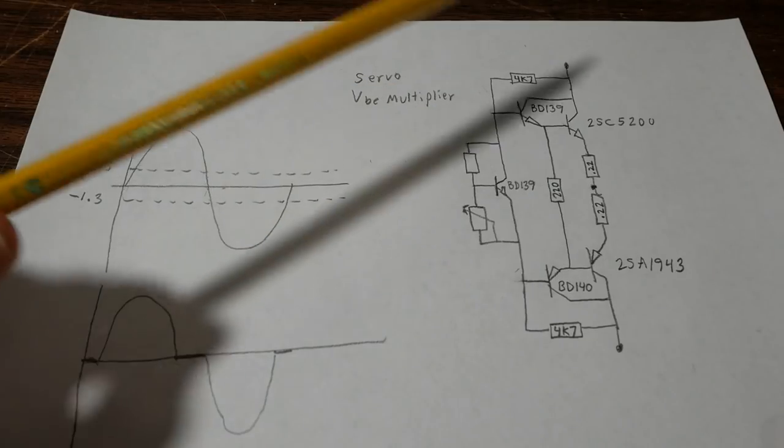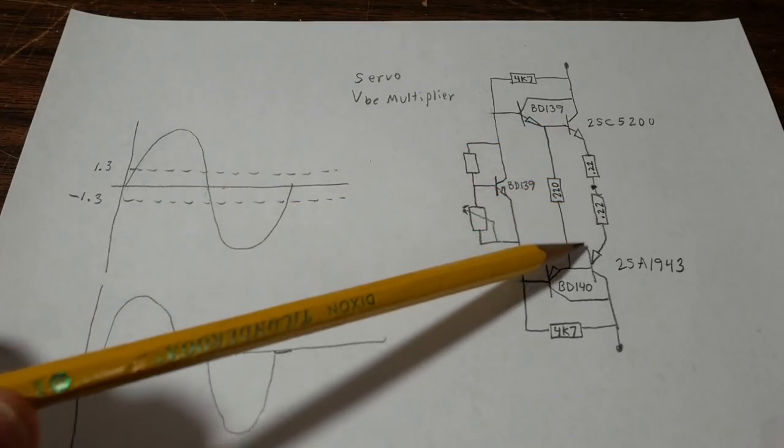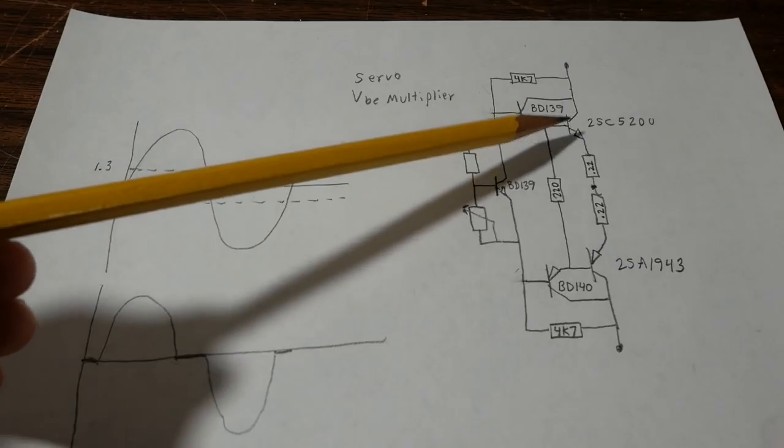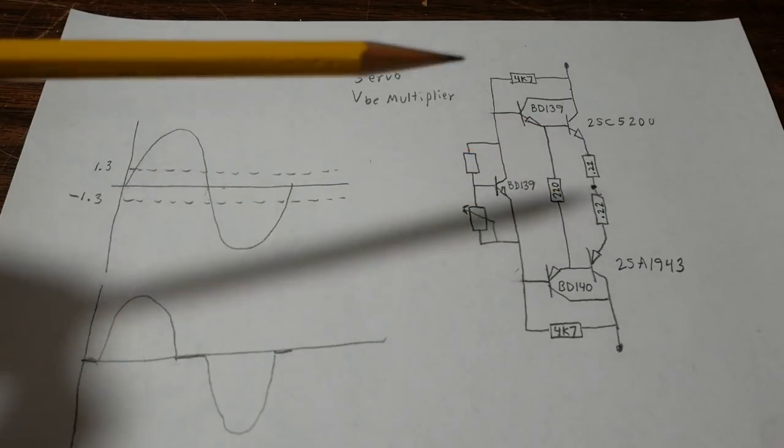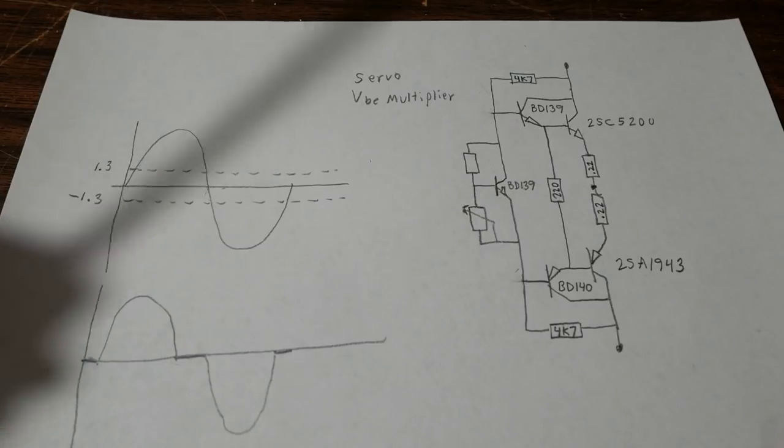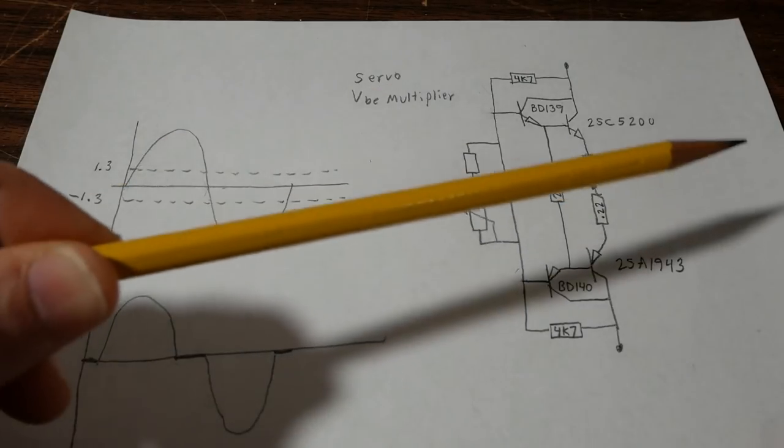So what would be the recommended bias current flowing in the output stage for this amplifier? I'm going to shoot for somewhere between 25 and 50 milliamps probably around 35 milliamps. Now as the amplifier starts from cold and heats up it may not track perfectly that's okay it's never going to be perfect but I want it to stay within a range.